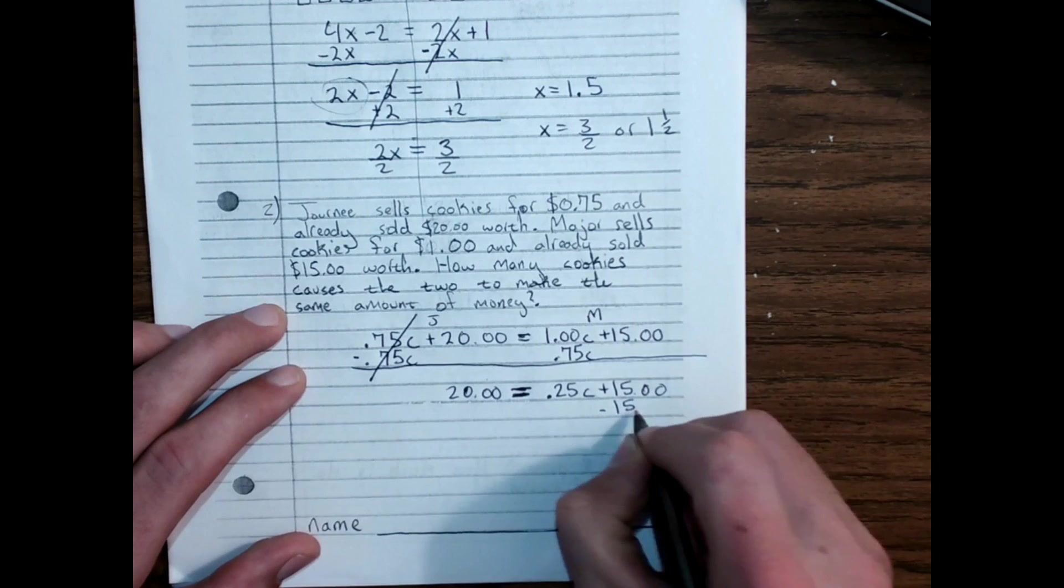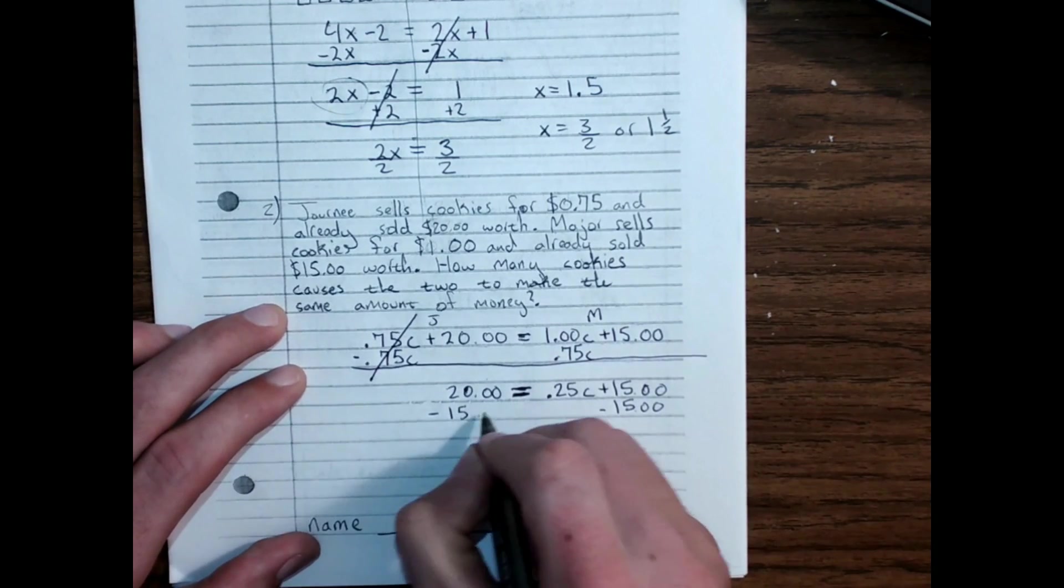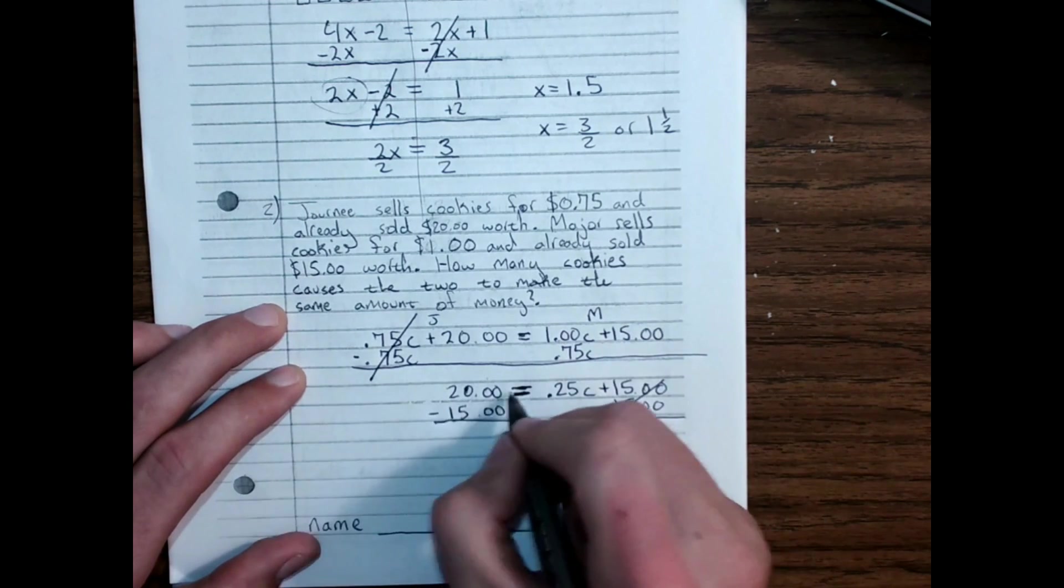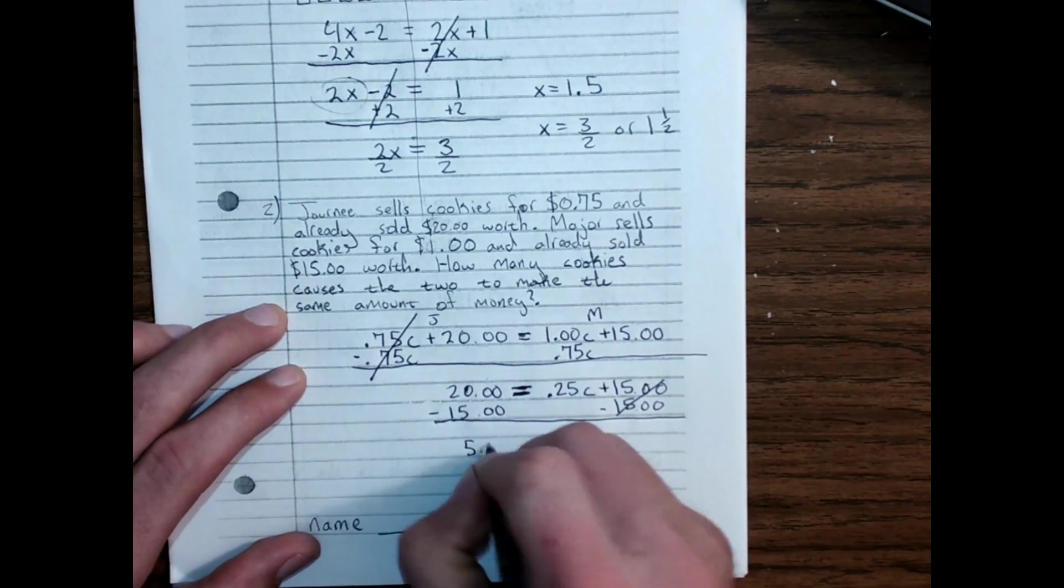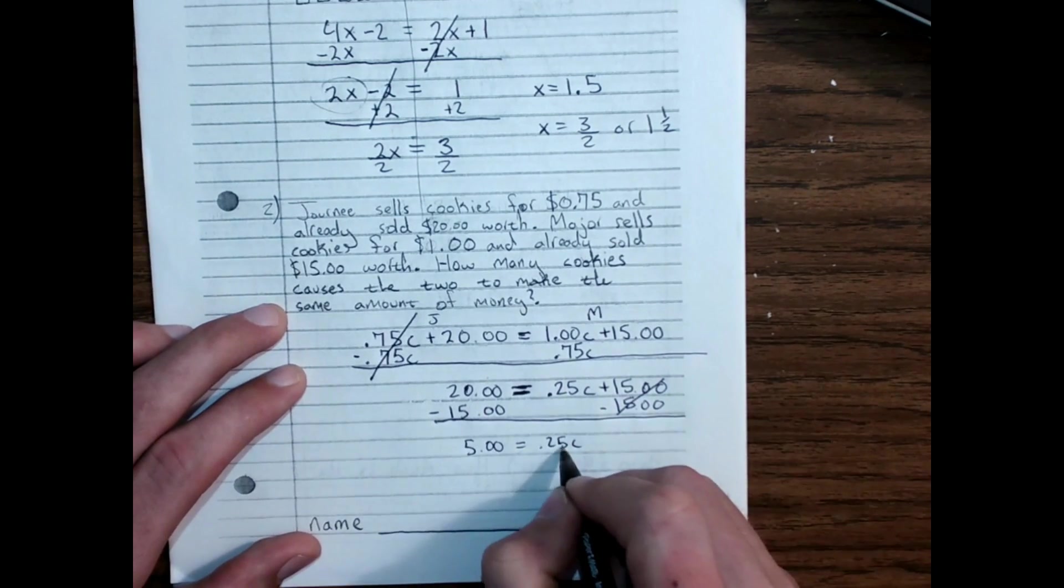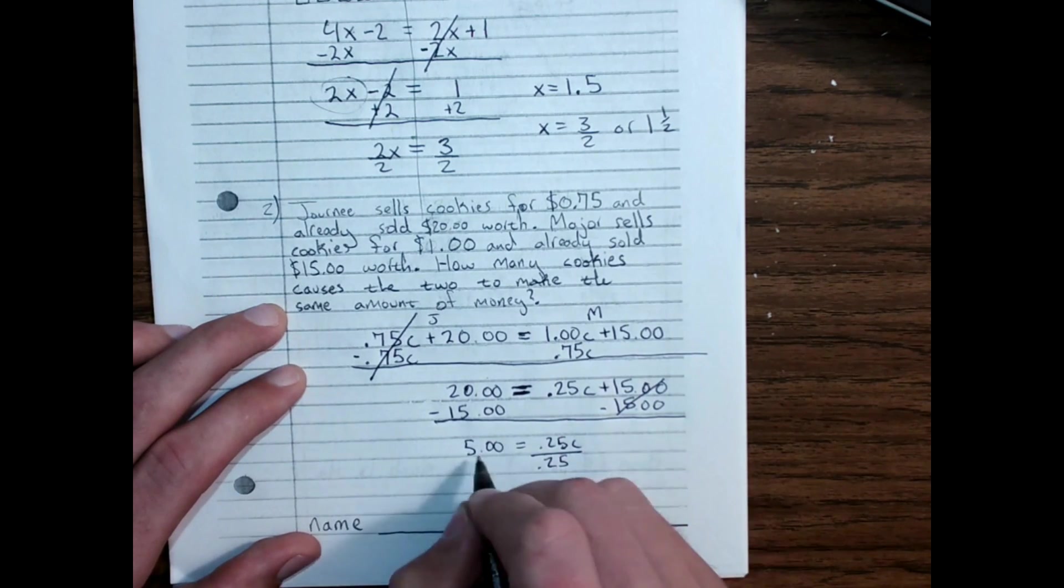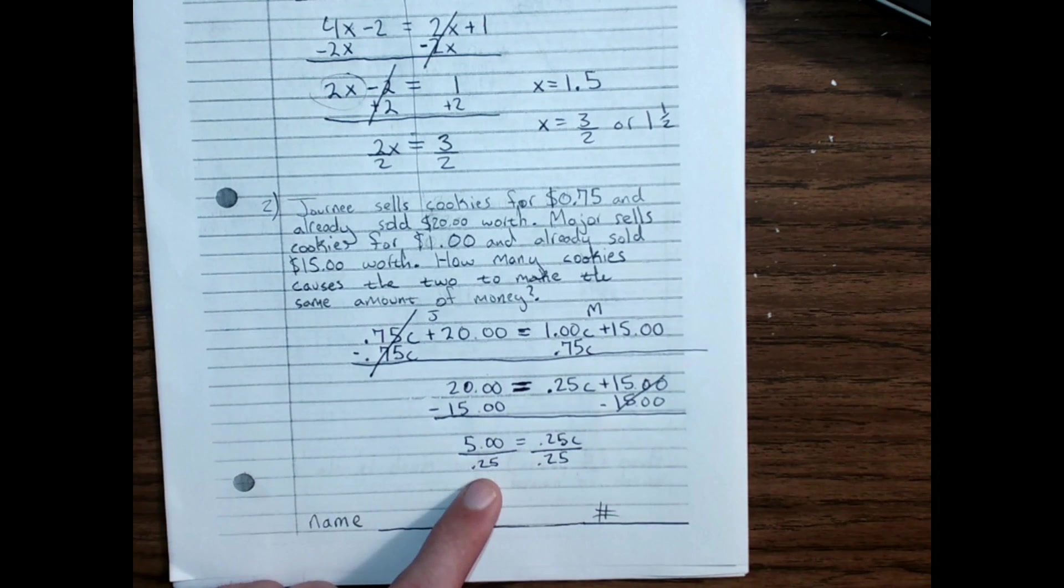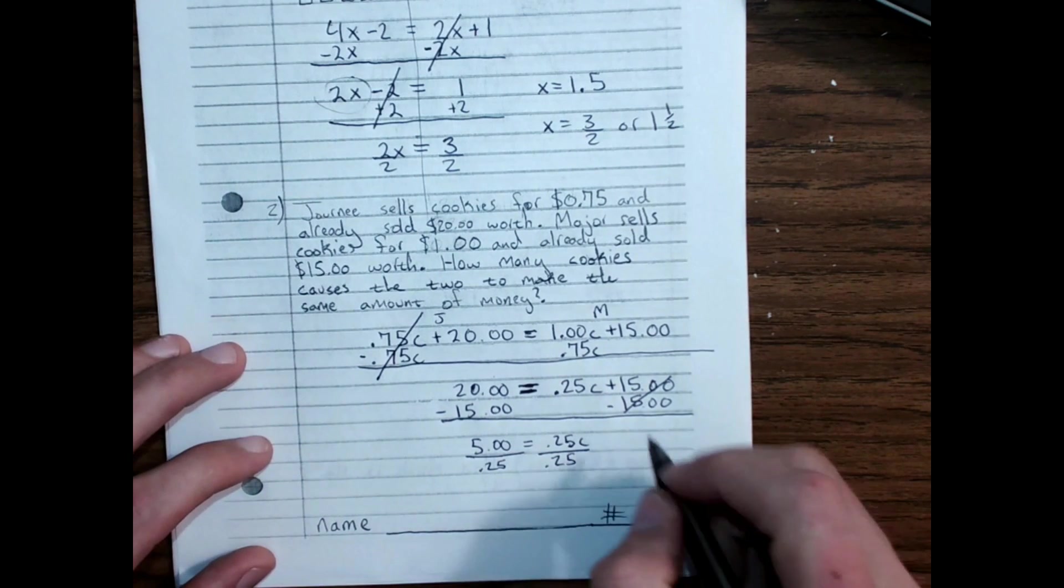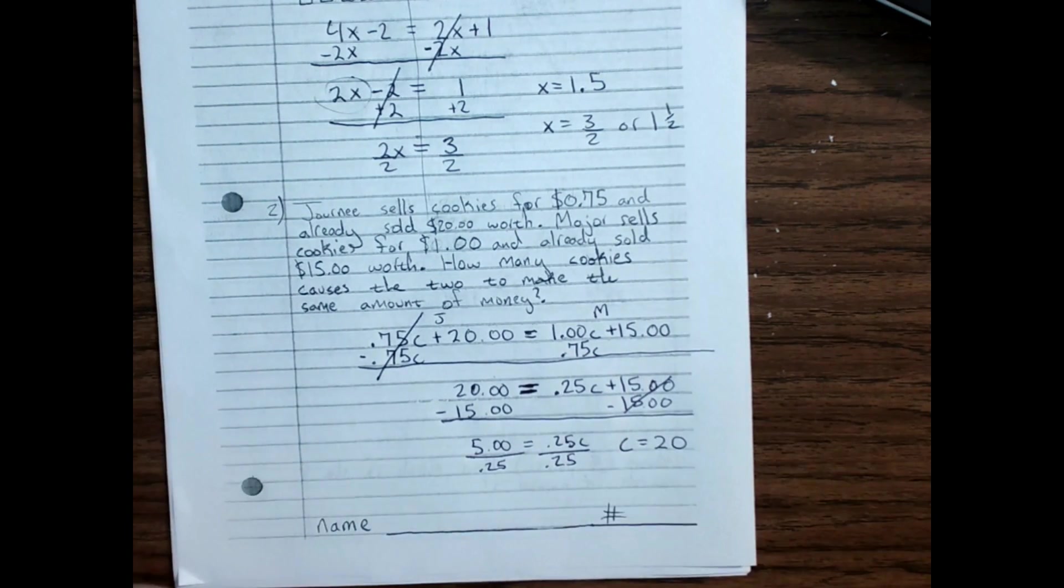I want the 0.25C to be all by itself, so I'm going to take away, or cancel out, the $15. The last step is to divide both sides by 0.25, there's four quarters and $1, I have $5, so 4 times 5, that should be 20. The answer should be C, equals 20.